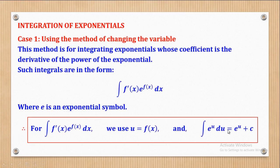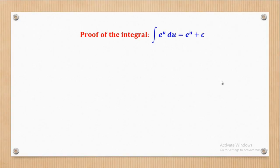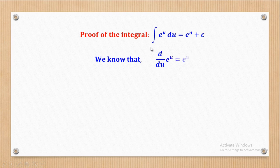Always remember that, it will help us much. First of all, we have to prove how it comes about that the integral of e^u equals e^u — it doesn't change at all. You already know that the derivative of e^u is equal to e^u.